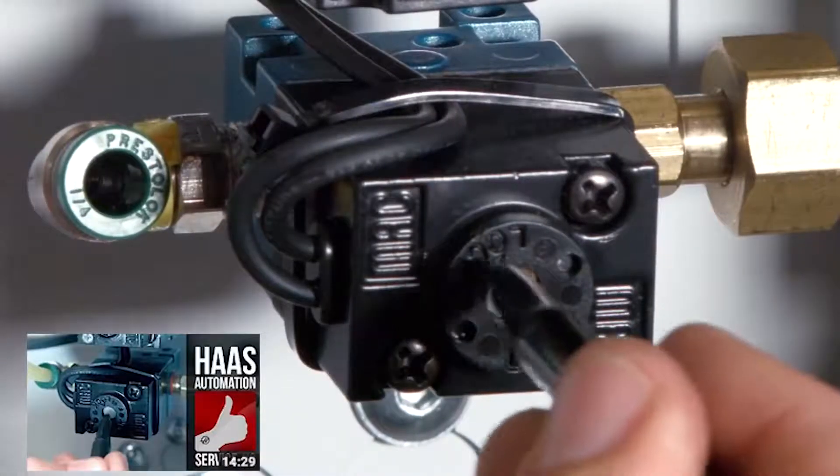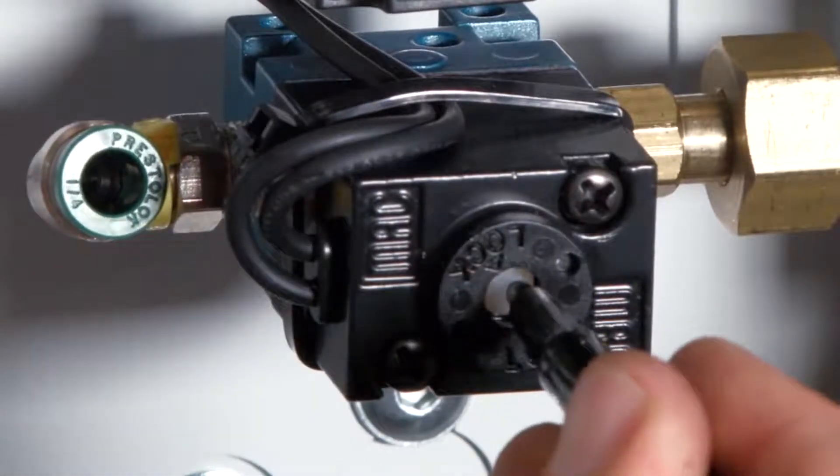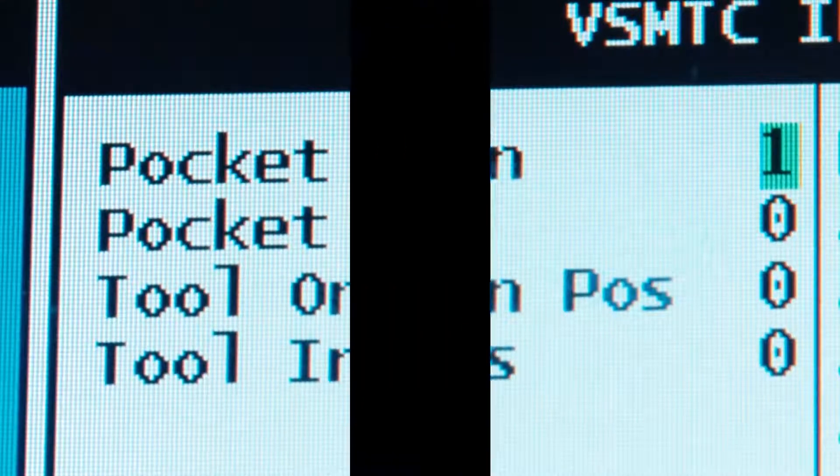If possible, manually activate the pocket up and down solenoid to verify that it's working correctly. Make sure the pocket up and down switches change state at the appropriate times.